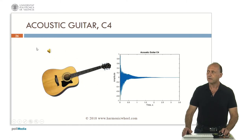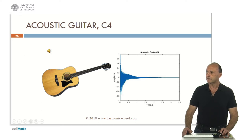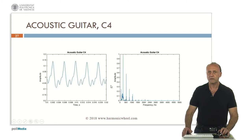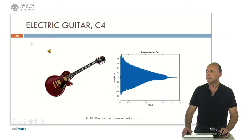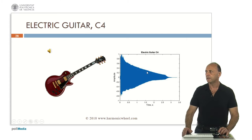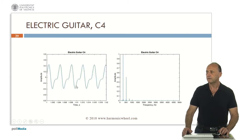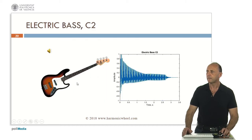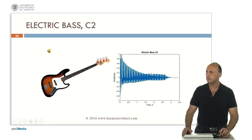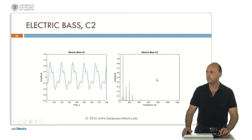Acoustic guitar, C4. Envelope, waveform, and spectrum. Electric guitar, C4. In this case, the attenuation is practically linear. This is the waveform and the spectrum. The electric bass, C2. This is the envelope, the waveform, and the spectrum.